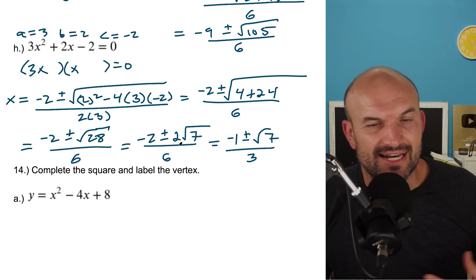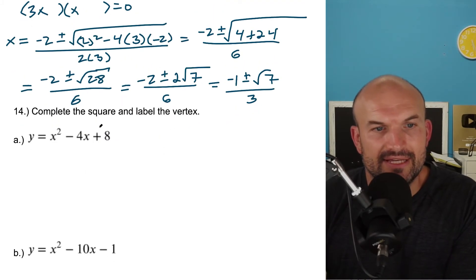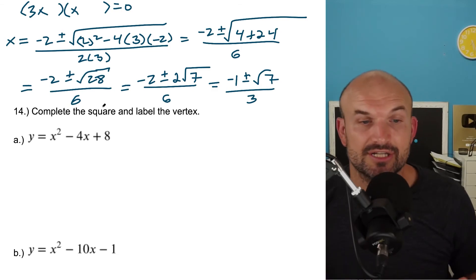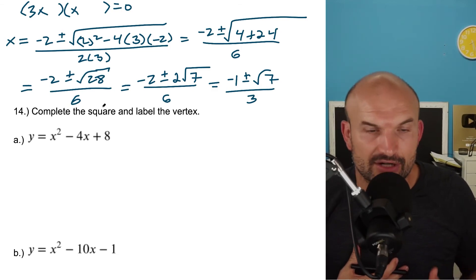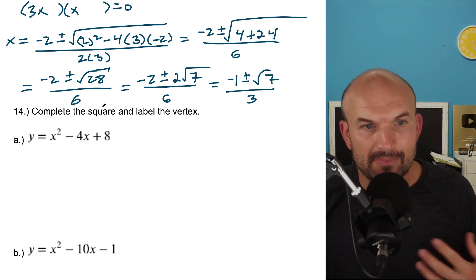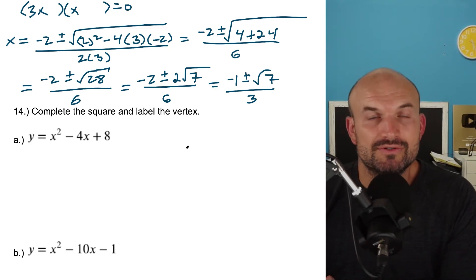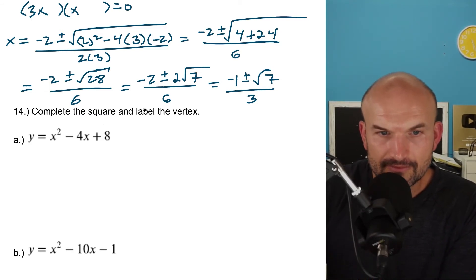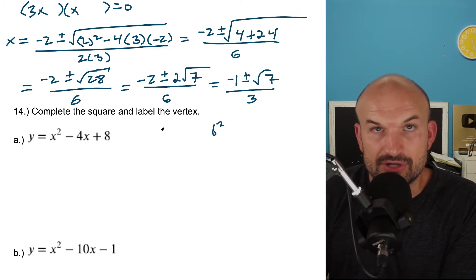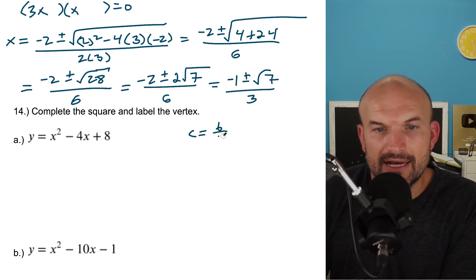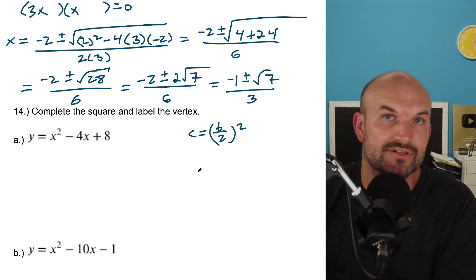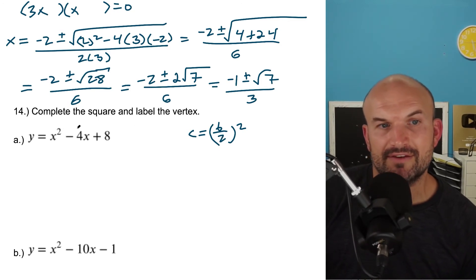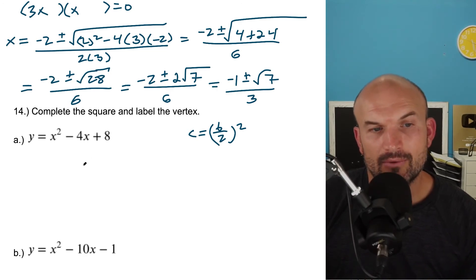Now let's take a look at completing the square. The main thing is this is actually another technique we can use to write an equation from standard form into vertex form. It is a solving technique. I prefer factoring or the quadratic formula, but completing the square is very helpful for rewriting an equation. The main idea is to find the value c that completes the square, where c equals b divided by two, quantity squared. Our goal is to create a perfect square trinomial that can be factored down into a binomial squared.